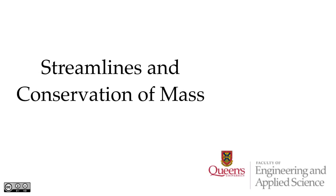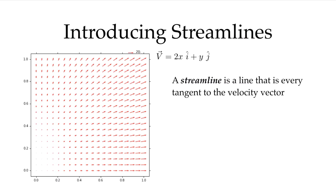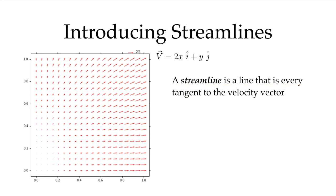Let's go on to another concept — I want to talk about streamlines. The definition of a streamline is that it's a line that is everywhere tangent to the velocity vector. You can draw this line everywhere parallel to the velocity vector. Here the velocity vector is in this direction — it's a streamline.